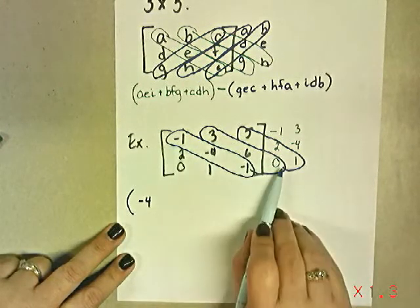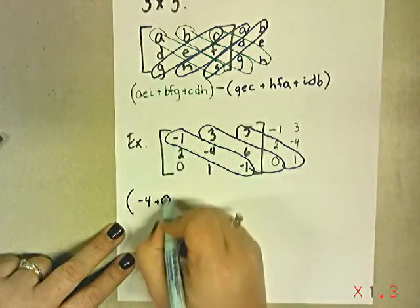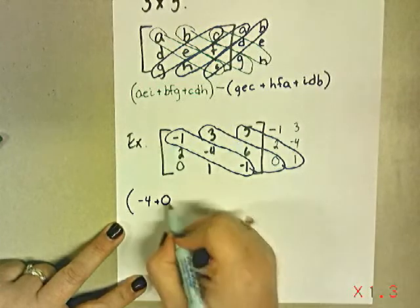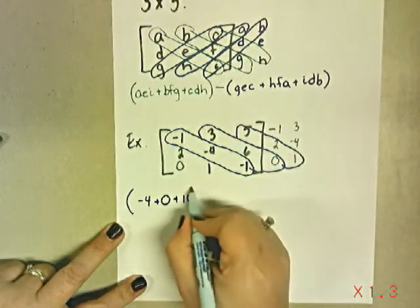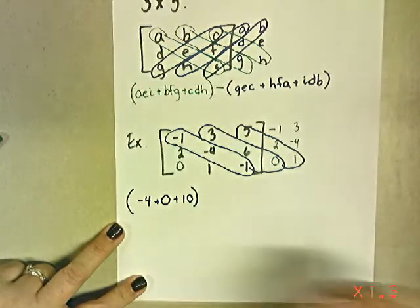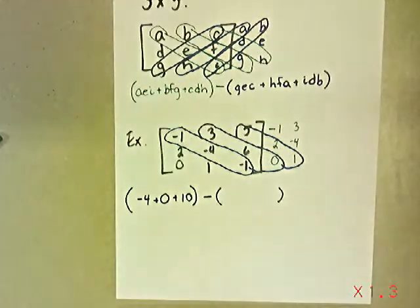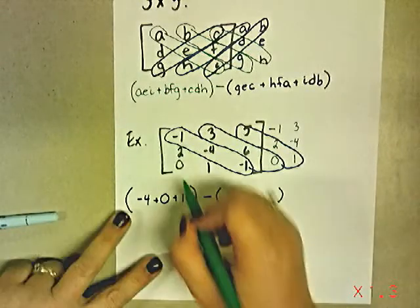3 times 6 times 0. Oh, I love 0s because that automatically means it's 0. 5 times 2 times 1 is 10. So there's our first parenthesis. Then we always subtract, just like we do with 2x2s.